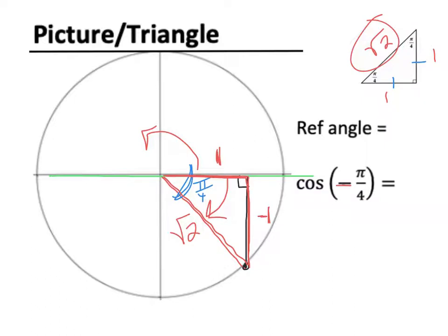So cosine of pi over 4. If you remember, cosine is adjacent over hypotenuse. So cosine of this angle. What is the adjacent side? 1. And what is the hypotenuse? Root 2.